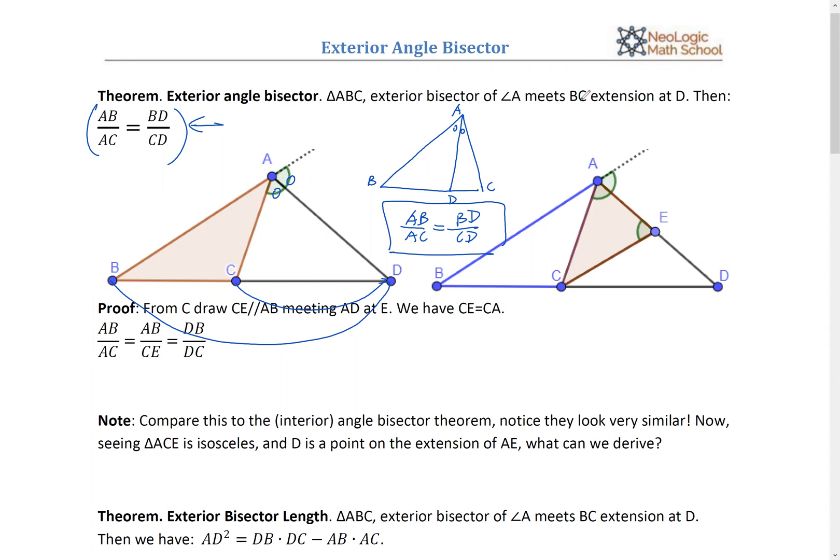For example, from point C, I draw CE that's parallel to AB. From point C, I draw a parallel line that's parallel to AB meeting the segment of AD at point E, all right?